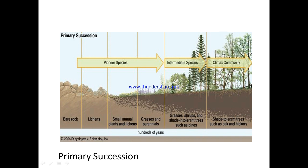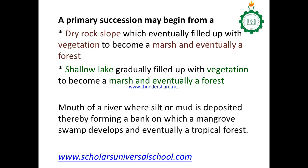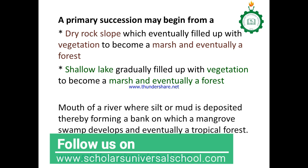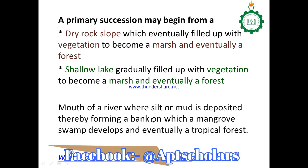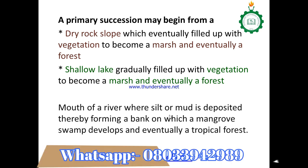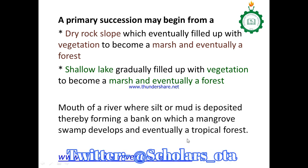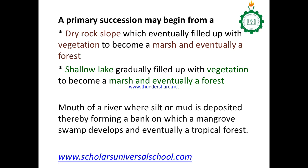Primary succession may begin from a dry rock, which eventually fills up with vegetation to become a marshland. A marshland is a transition between aquatic and terrestrial environment — a shallow, waterlogged land filled with grasses and few plants. It eventually becomes a forest. Or we can have a shallow lake gradually filled with vegetation until it becomes a marshland and eventually a forest, which we call a climax community. Also, at the mouth of a river, silts or mud are deposited forming a bank on which a mangrove swamp develops and eventually a tropical forest is formed.